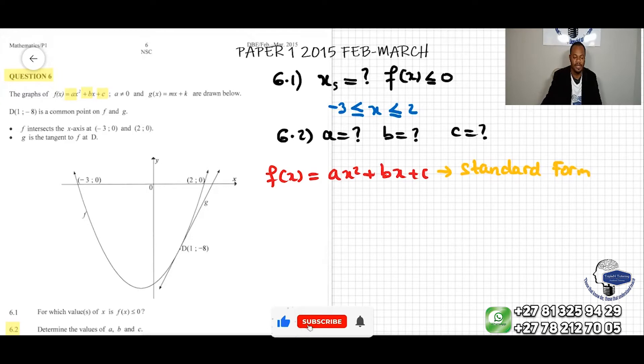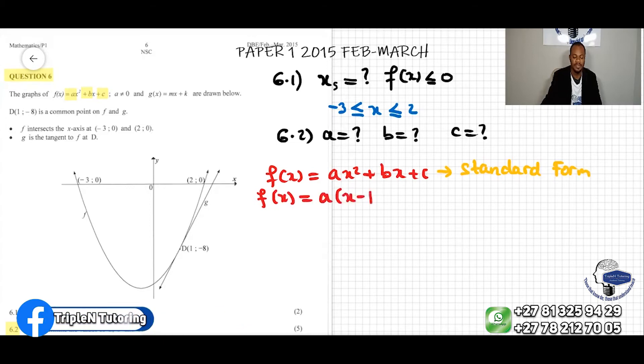Or sometimes f(x) can be given by a(x - p)² + q. And this is called the TP form, the turning point form.